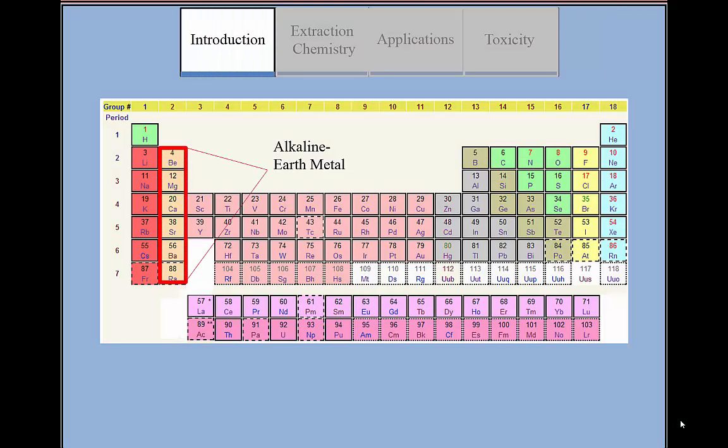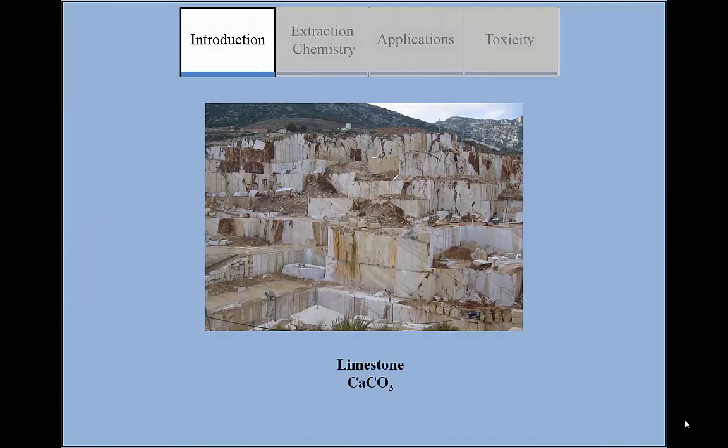Calcium can be found in Group 2 of the Periodic Table of Elements, or the alkaline earth metals. Calcium is mainly found in limestone, which is composed of calcium carbonate.